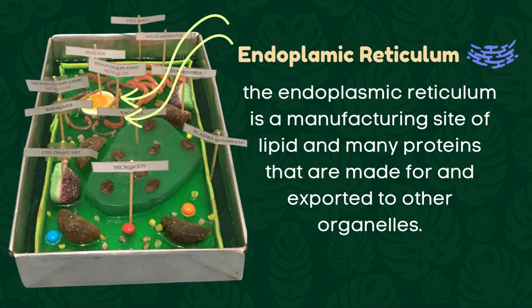The smooth and rough endoplasmic reticulum. The endoplasmic reticulum is a manufacturing site of lipids and many proteins that are made for and exported to other organelles. The brown part of the model near the nucleus has dotted sour candies and represents the rough endoplasmic reticulum, which is studded by ribosomes. The red part is the smooth endoplasmic reticulum, which appears as semi-connected compartments.